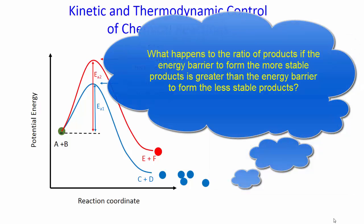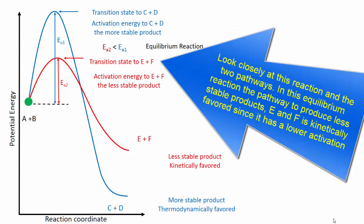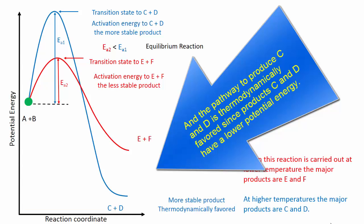What happens to the ratio of products if the energy barrier to form the more stable products is greater than the energy barrier to form the less stable products? Look closely at this reaction and the two pathways. In this equilibrium reaction, the pathway to produce the less stable products, E and F, is kinetically favored since it has the lower activation energy. And the pathway to produce C and D is thermodynamically favored since products C and D have a lower potential energy.